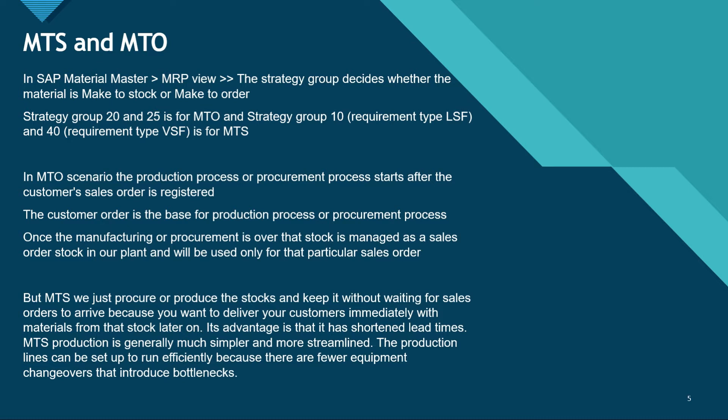In the MTO scenario, the production process or procurement starts after the customer sales order is registered. I have an order, so I'm making the part with respect to that order — that's Make to Order. The customer order is the base of this process, and once manufacturing is completed, the stock is managed as a sales order stock in our plant and will only be used for that particular sales order.